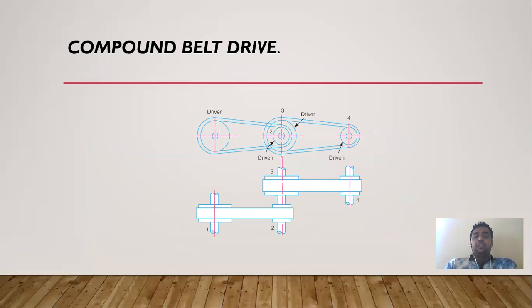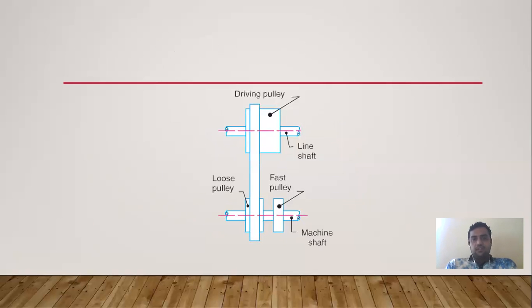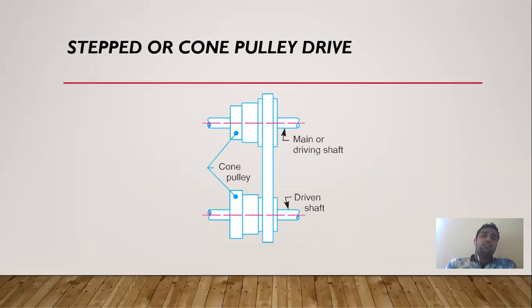In a compound belt drive, a driven pulley has another pulley mounted on the same shaft, which acts as a driver pulley for the next stage. A stepped or cone pulley drive uses pulleys of varying diameters — by shifting the belt to different steps, we can change the speed of the driven shaft.